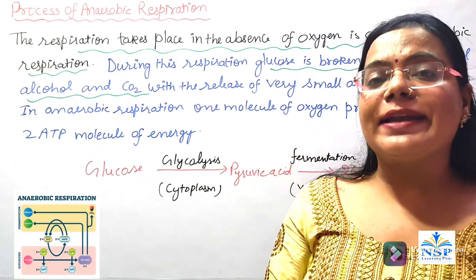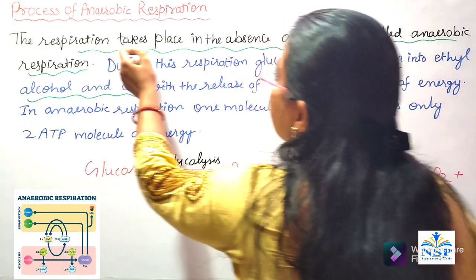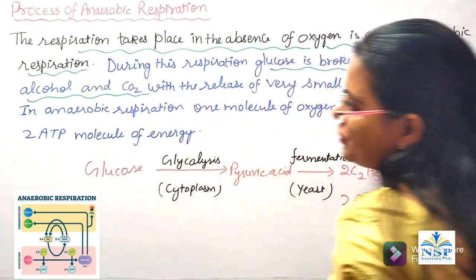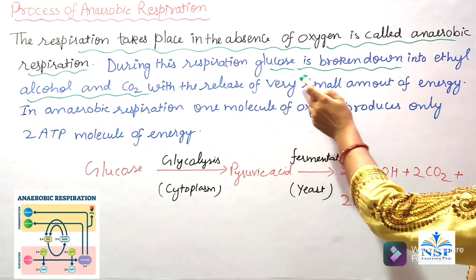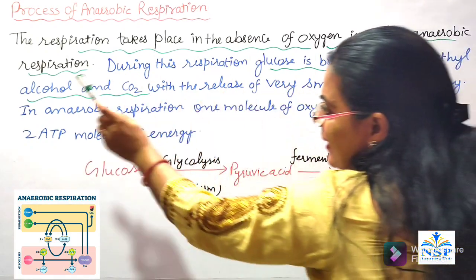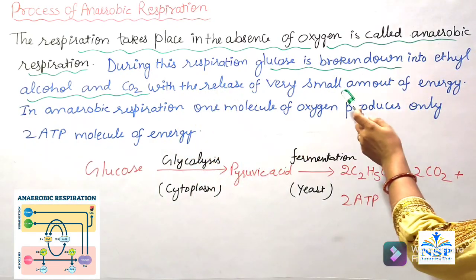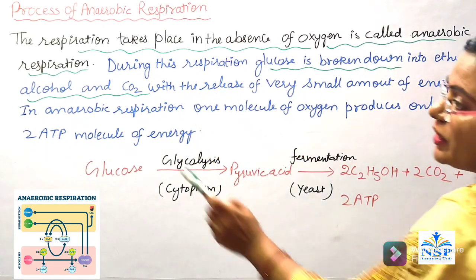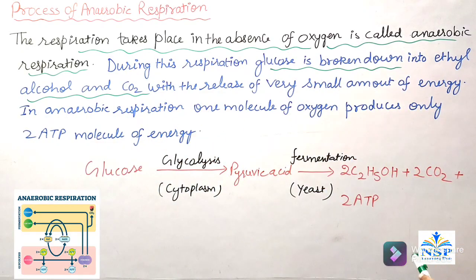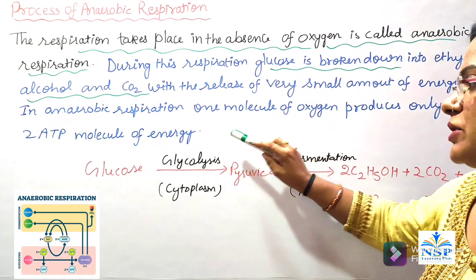The process of anaerobic respiration is the respiration that takes place in the absence of oxygen. During this respiration, glucose is broken down into ethyl alcohol and carbon dioxide with the release of a very small amount of energy. In anaerobic respiration, one molecule of glucose produces only two ATP molecules of energy.